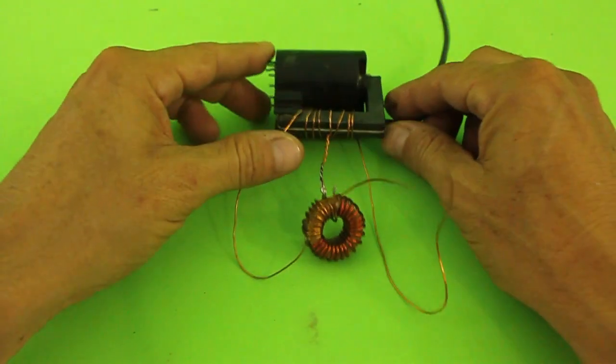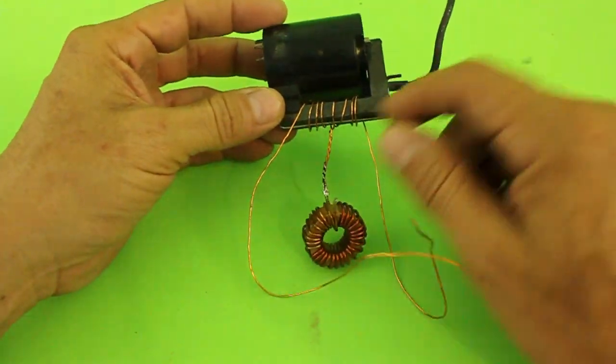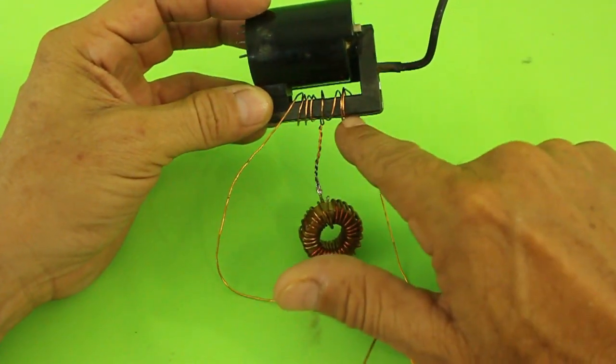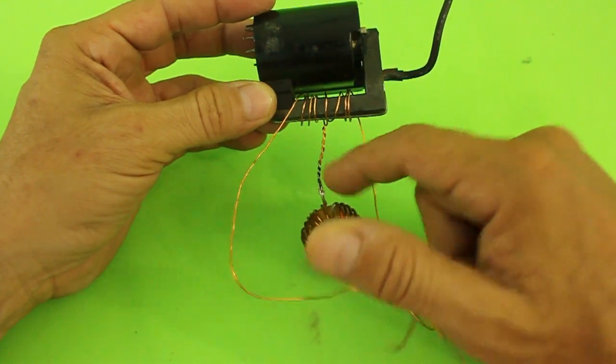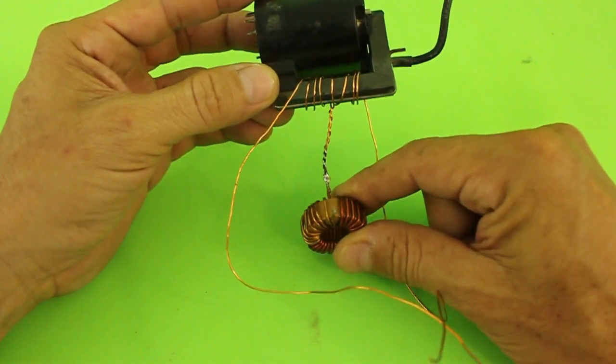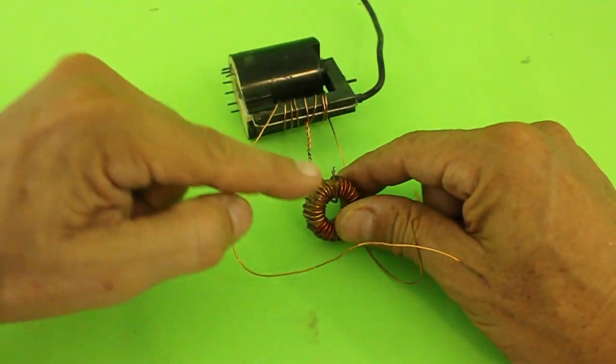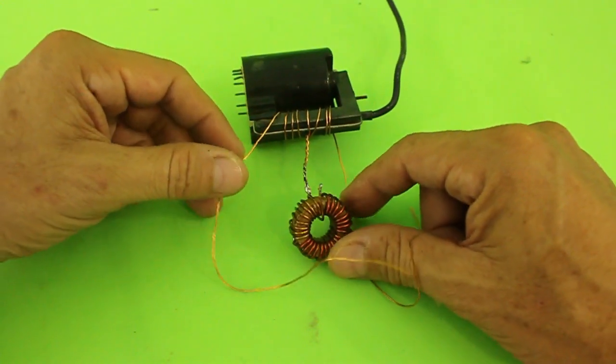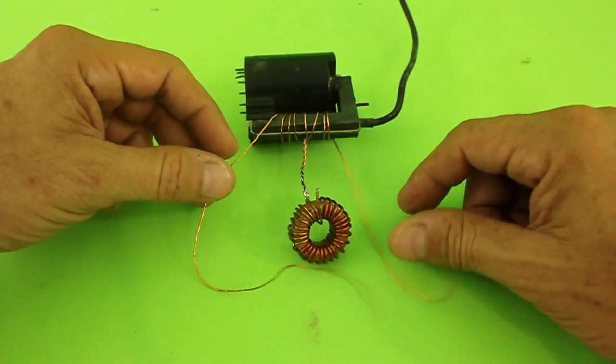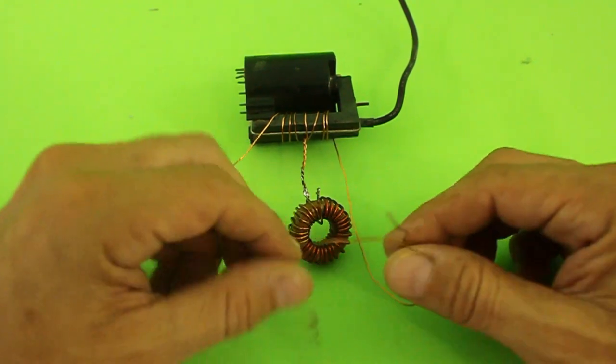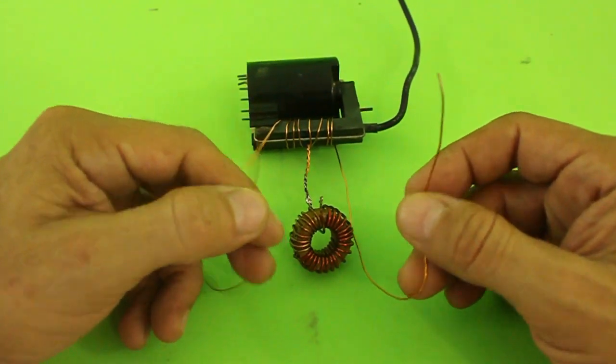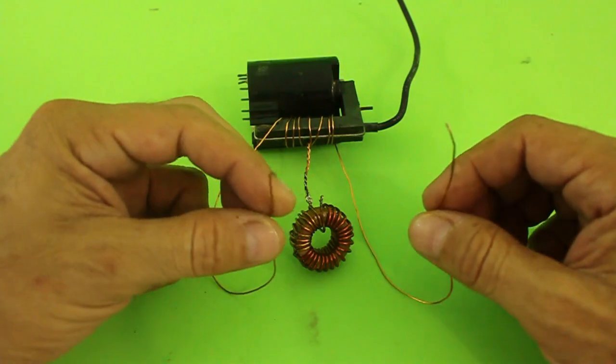Here's the flyback. We have wound 10 turns on the ferrite core with a center tab. The center tab goes to the inductor and the other side of the inductor goes to the positive of the voltage supply. The other two wires from the coil go to the connector in the PCB.